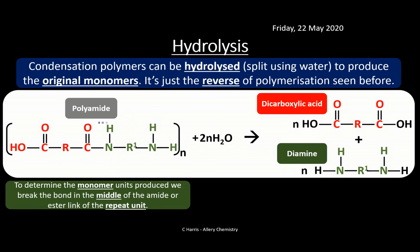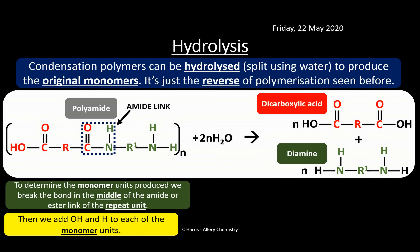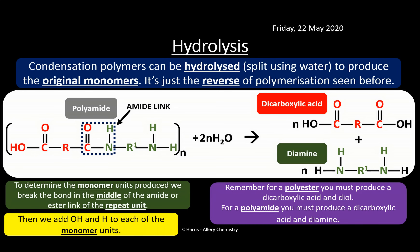Spot the amide link in the repeat unit — that's what we look out for. Then add OH and H to each of the monomer units. For polyester hydrolysis, we produce a dicarboxylic acid and a diol. For polyamide hydrolysis, we produce a dicarboxylic acid and a diamine. Look carefully at the link — it doesn't matter what the rest of it looks like. Just find the link and add your OH and H respectively.